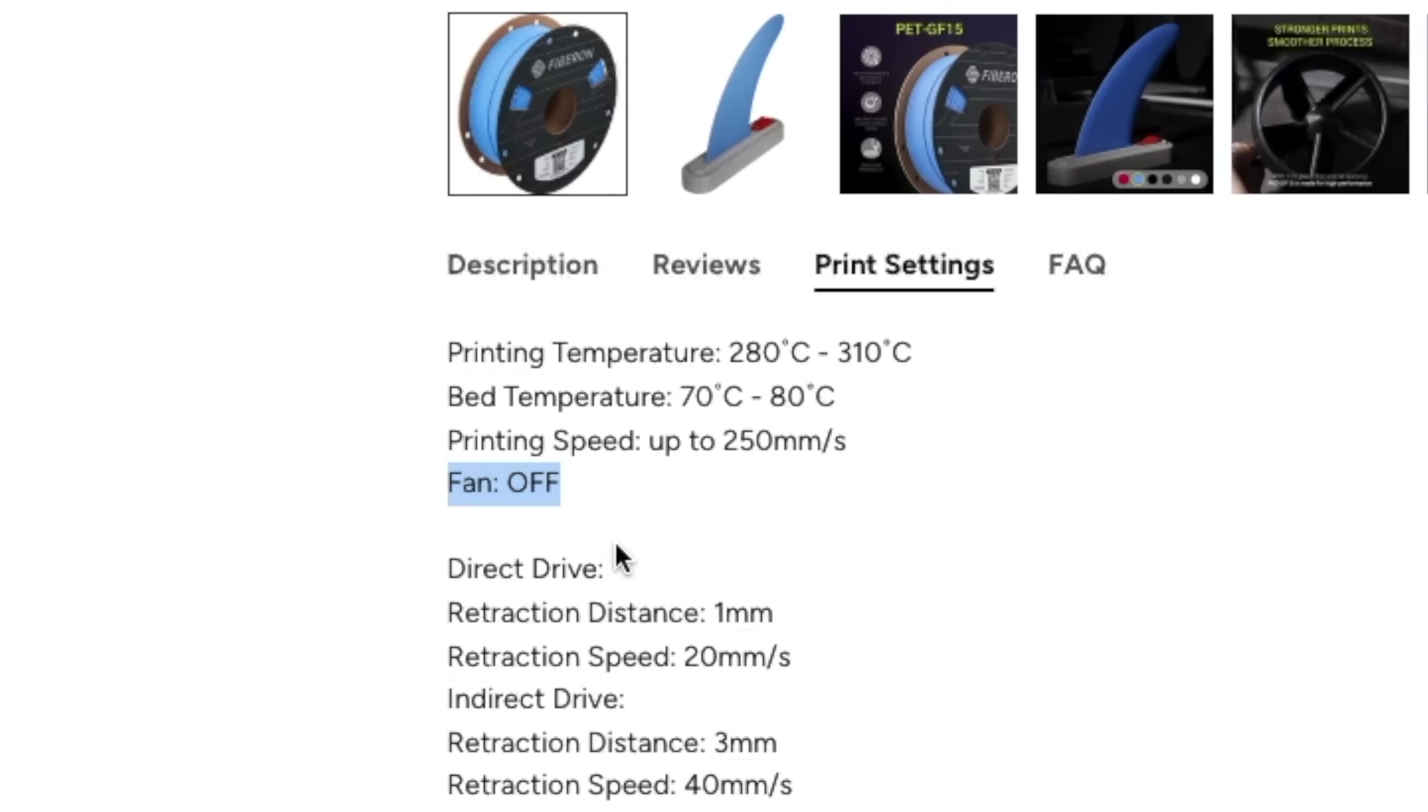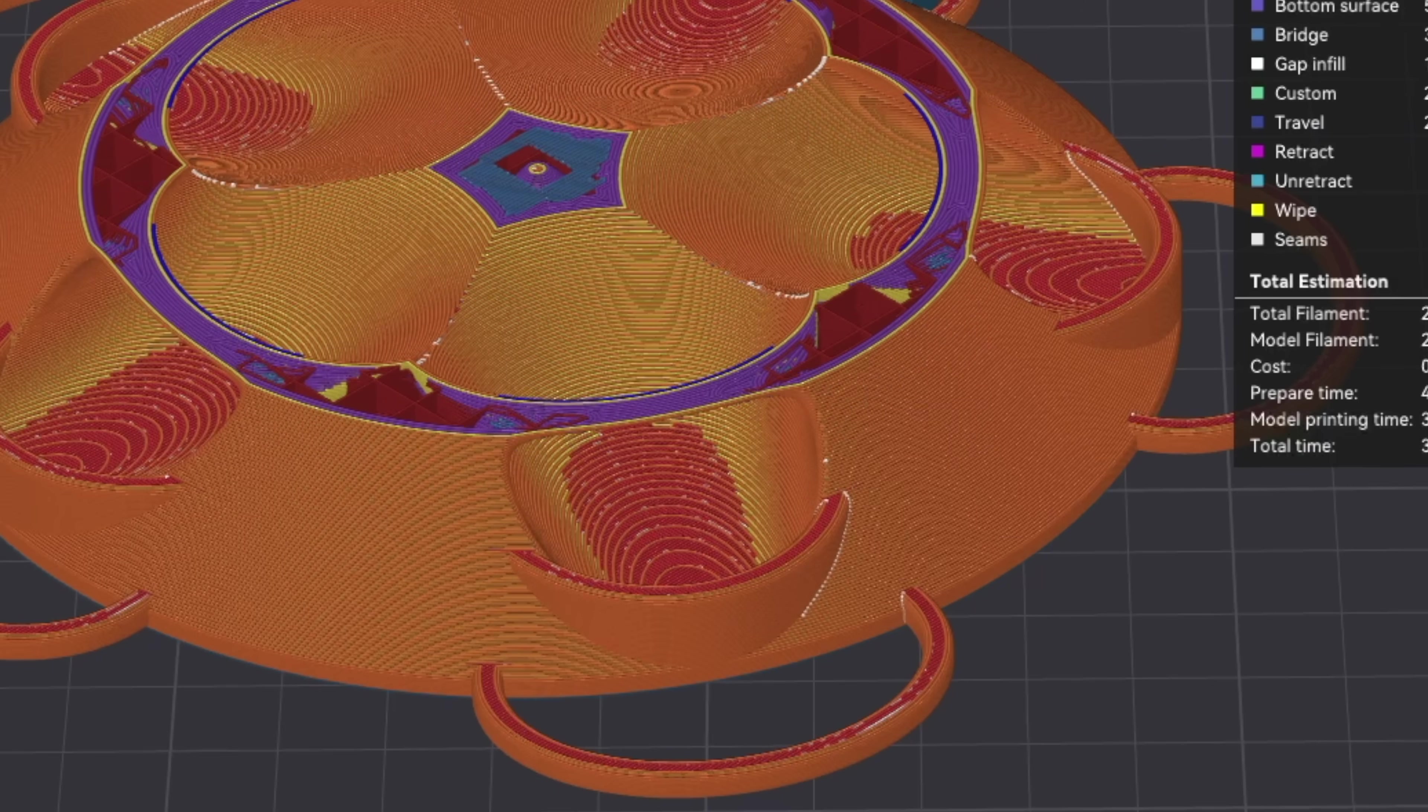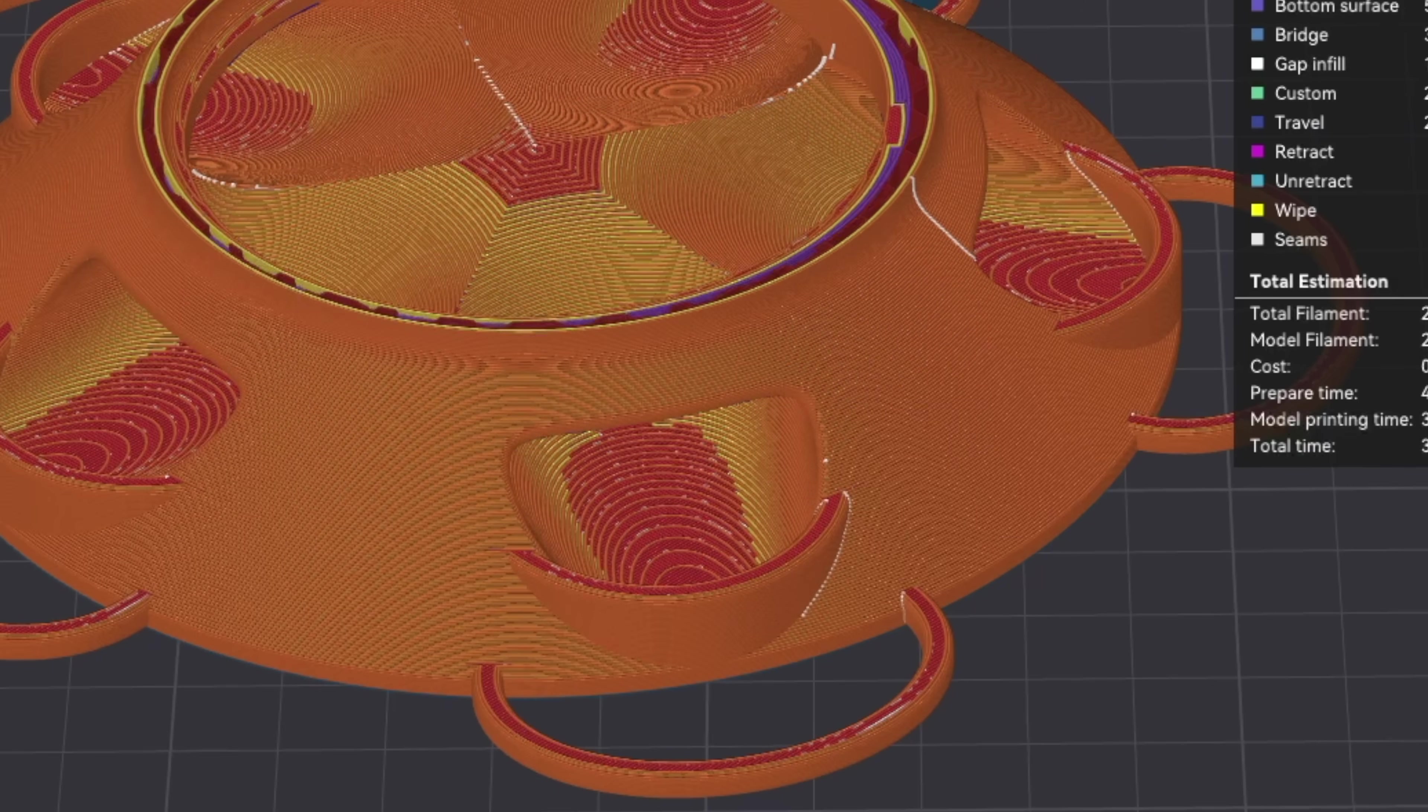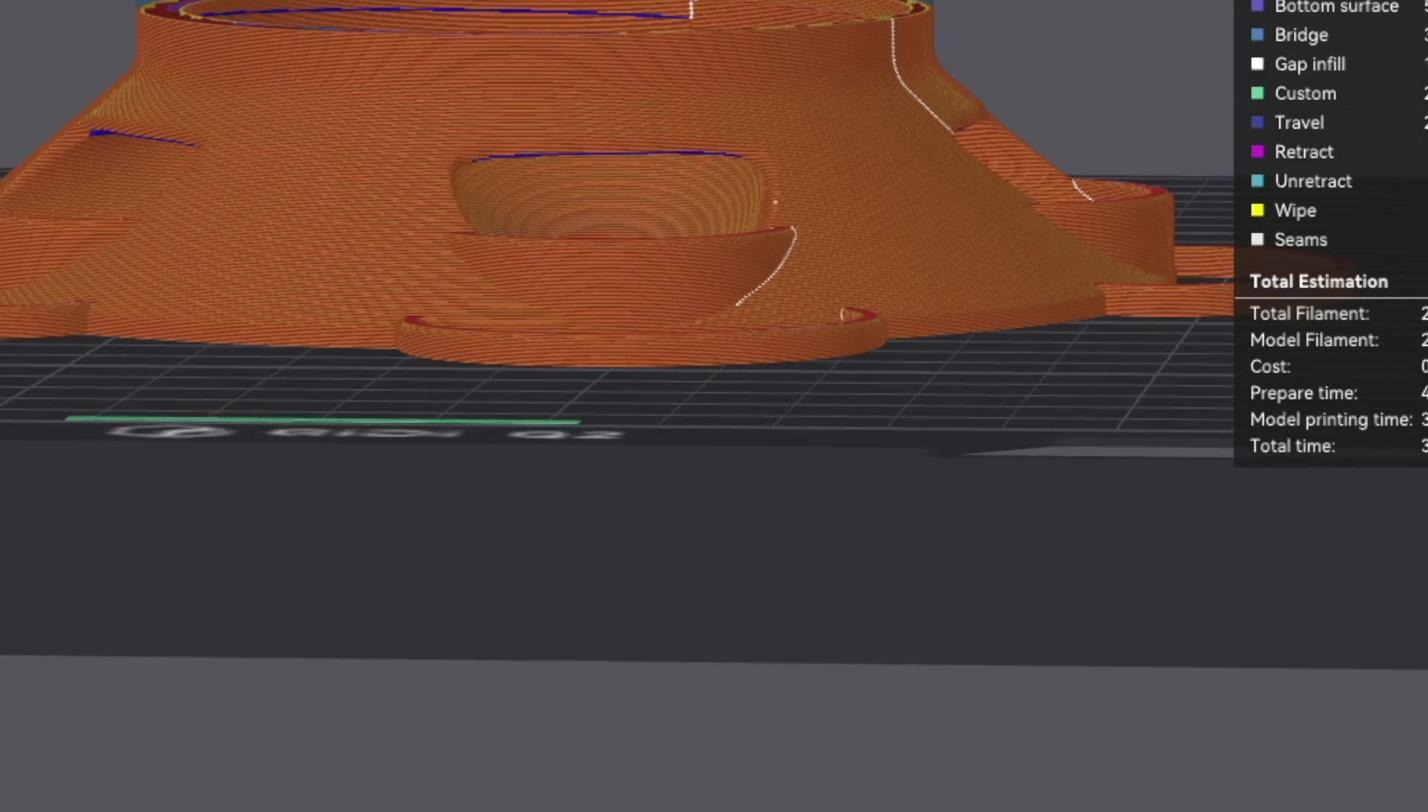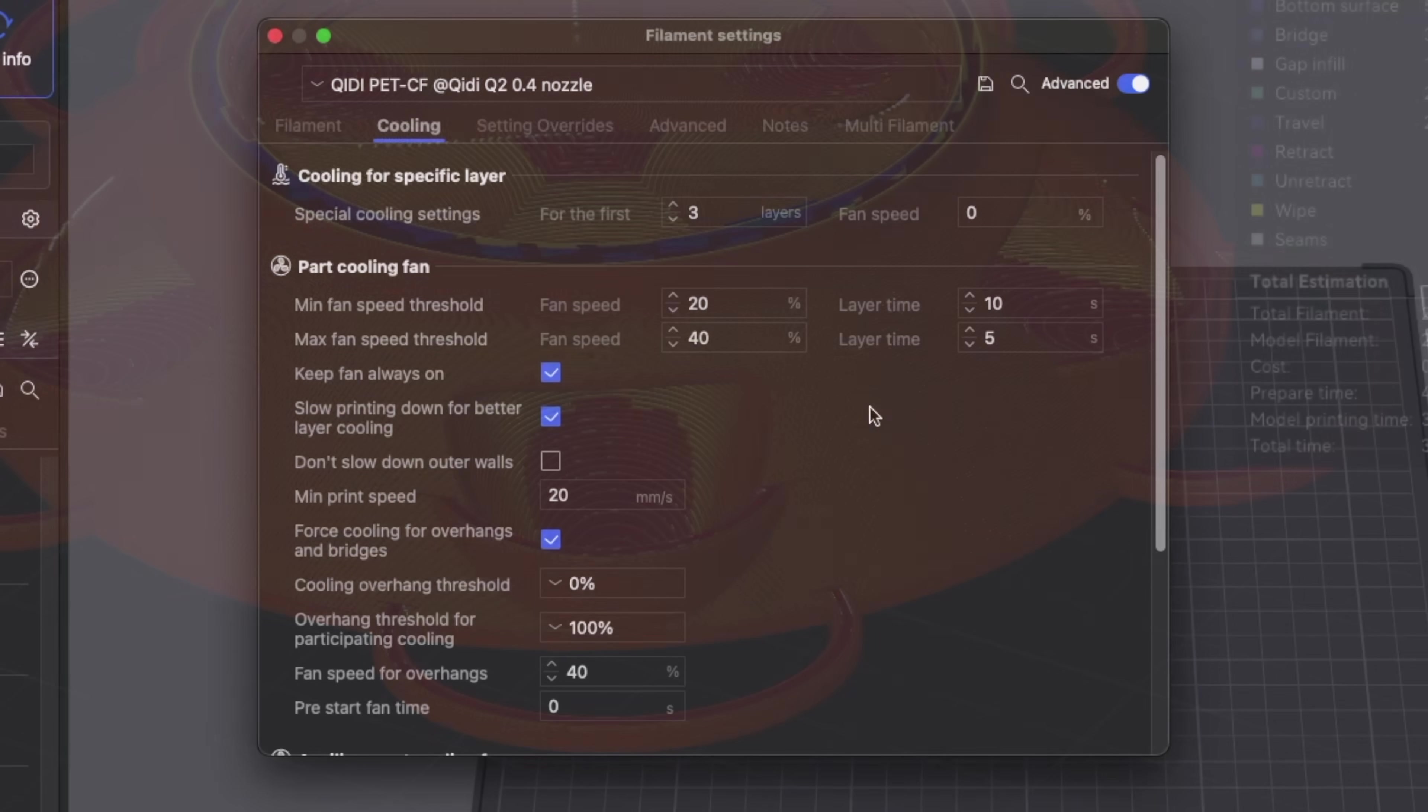The exception to this is in layer cooling. Polymaker's product page recommends using no layer cooling fan, and the issue with this is that it limits the quality of the parts that you can print because without having any sort of cooling, you're going to have some extremely rough overhangs and some very saggy bridges. Because of this, I stuck with the built-in profile for the PET-CF that uses a layer cooling fan of 20 to 40 percent depending on the layer time, and it doesn't use the larger auxiliary fan.